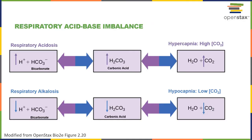Acid-base imbalance can either have a respiratory cause or a metabolic cause. When making a diagnosis for an acid-base imbalance disorder, it's important to pay attention to three variables. The blood pH will first tell you whether the patient has acidosis or alkalosis. A blood pH below 7.35 is acidosis, and a blood pH above 7.45 is alkalosis.